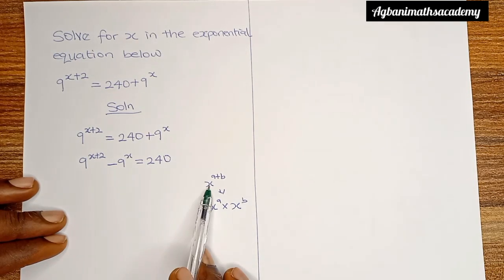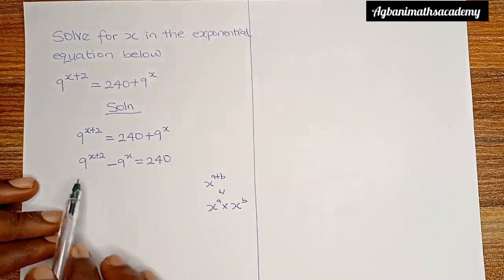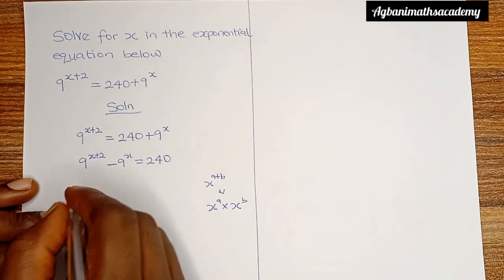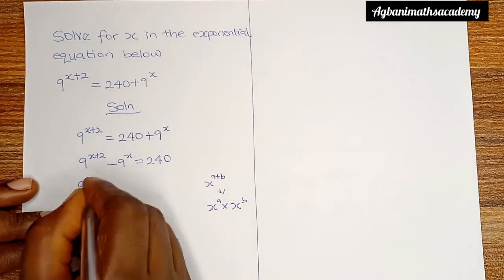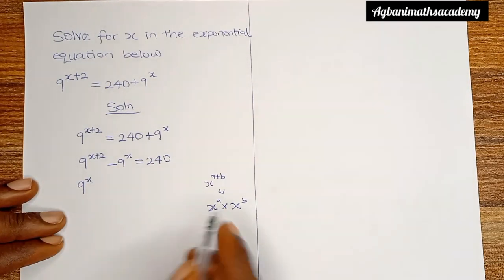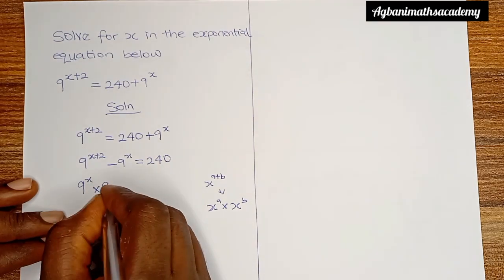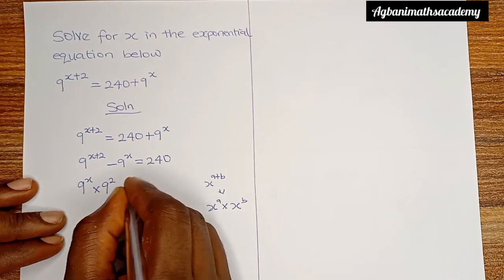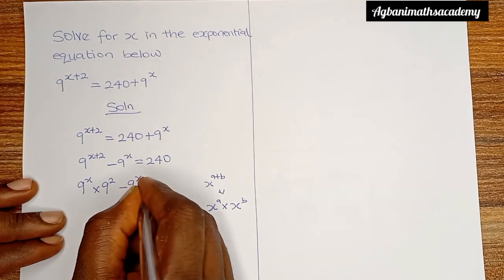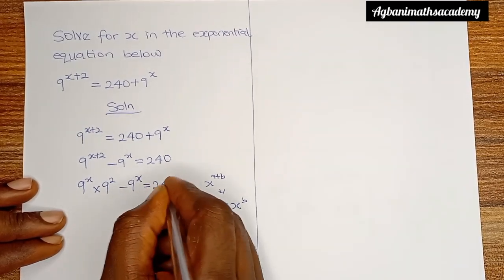So here, instead of having just x, we now have x plus 2. We're going to expand 9 raised to the power x plus 2 as 9 raised to the power x multiplied by 9 raised to the power 2, minus 9 raised to the power x, and this is equal to 240.